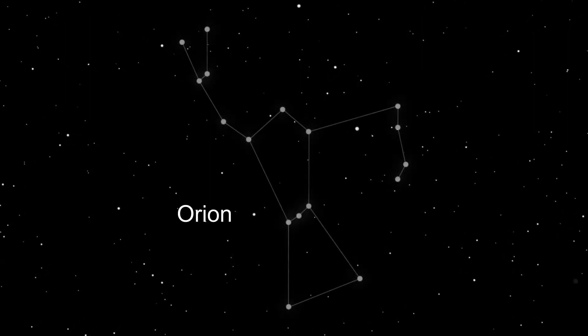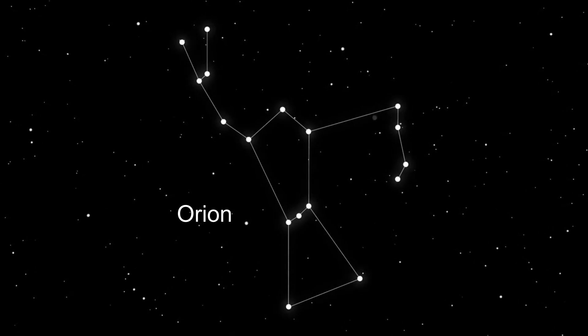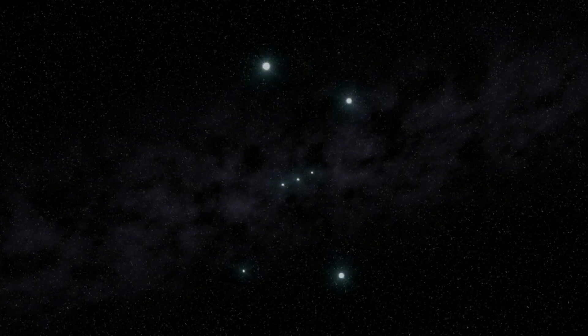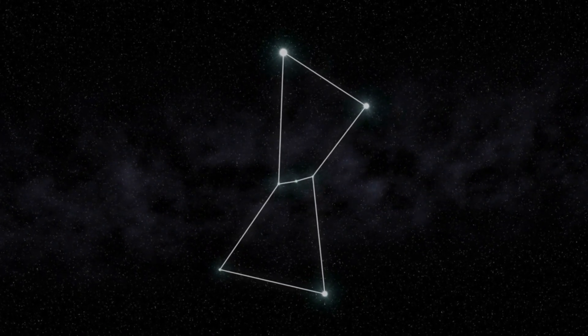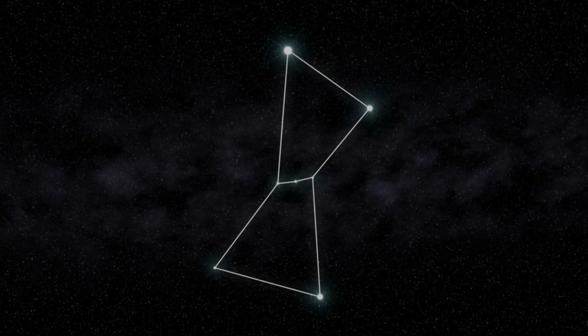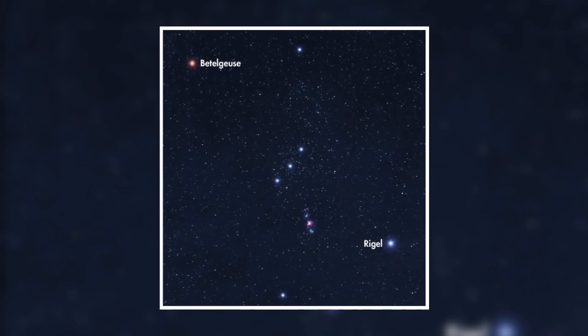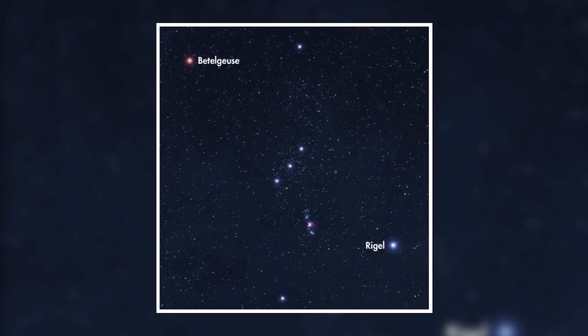Orion, along with the Great Bear and the Southern Cross, is among the most prominent constellations visible from Earth. Compared to the Bear and the Cross, it is larger and brighter, and it contains two first magnitude stars, Betelgeuse and Rigel, formerly known as Beta and Alpha Orionis.